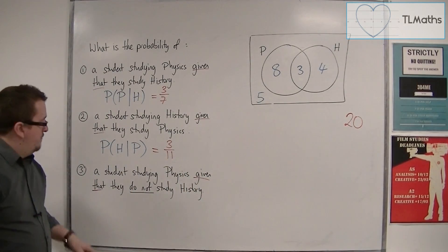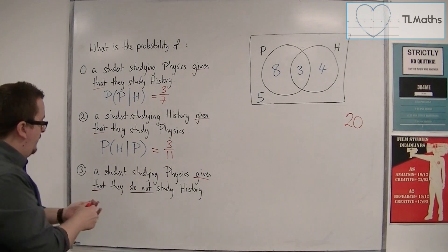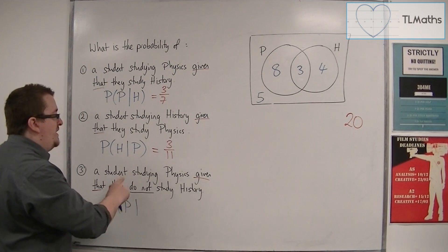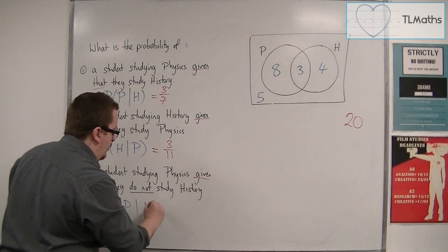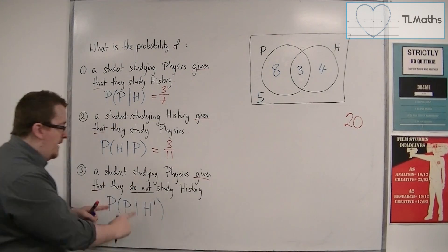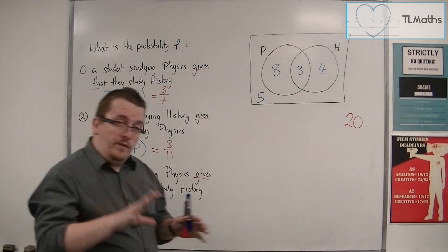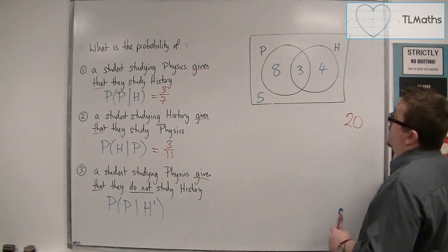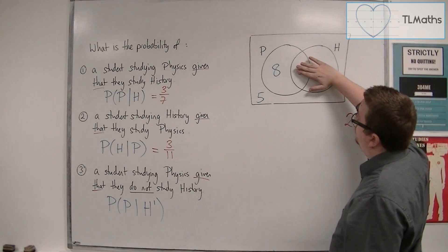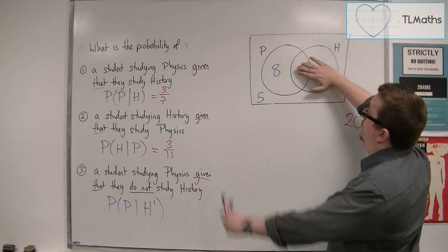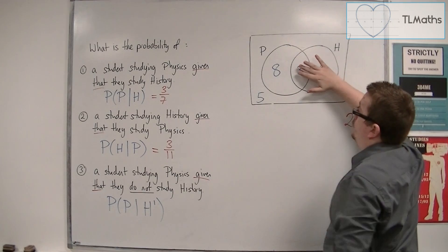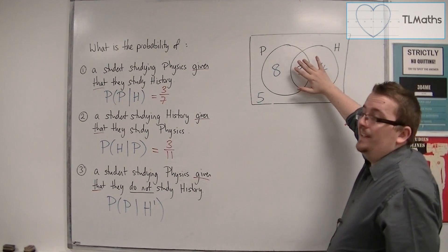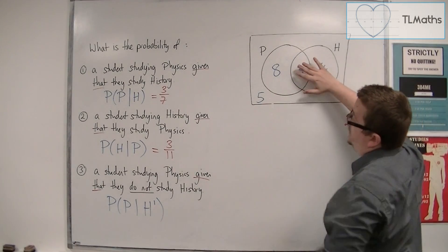Finally, a student studying physics given that they do not study history could be written as P(P|H'). Given that they don't study history, we look at the people that don't study history. The probability of them studying physics is 8 out of 13.